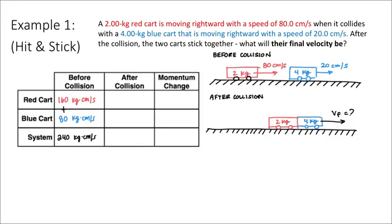I know then that for momentum to be conserved, the system must also have 240 units afterwards. I know that's going to be true here. I don't have any external forces. So in other words, the change in momentum of the system should always be zero. So this should always be zero.